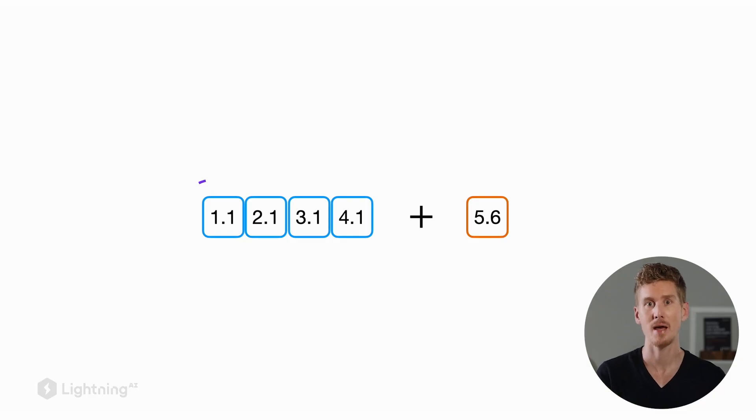Consider this example where we have a vector consisting of four values on the left hand side and we have a number on the right hand side and we want to add this number to the vector. In math this would not be possible - we can't just add a single number to a vector.